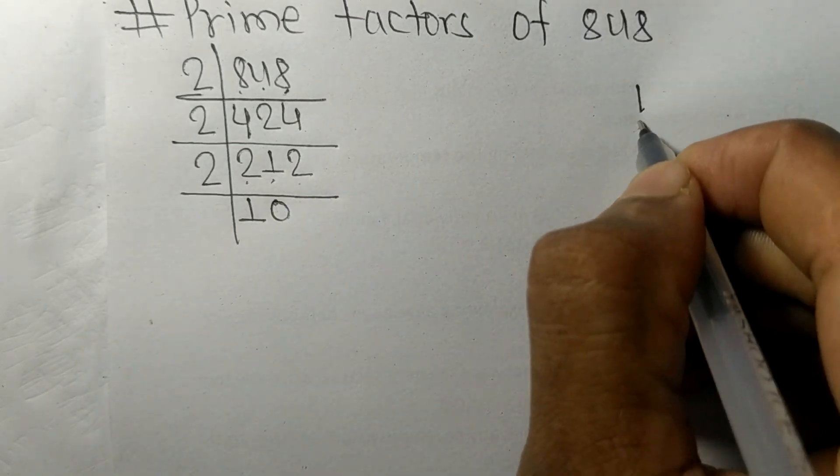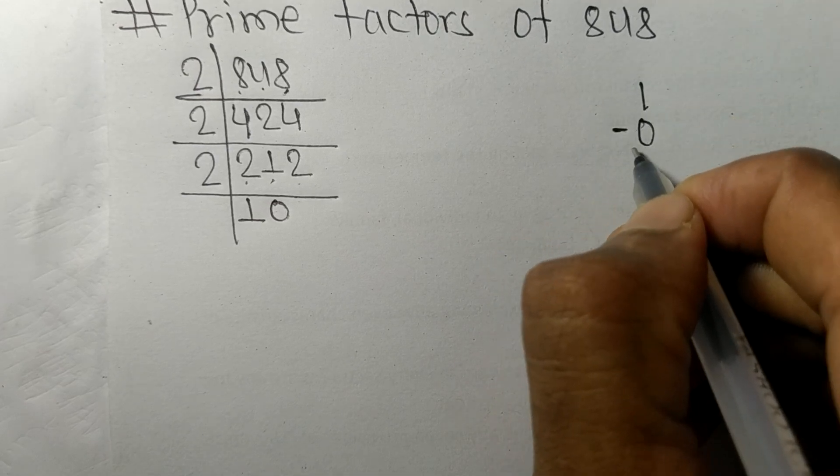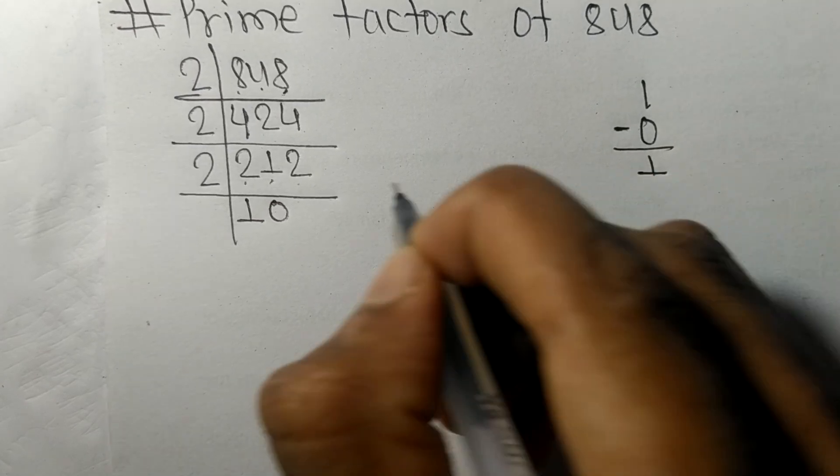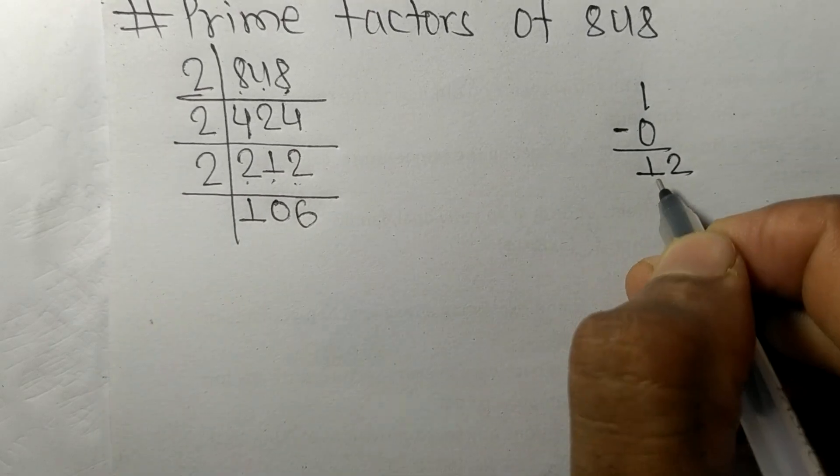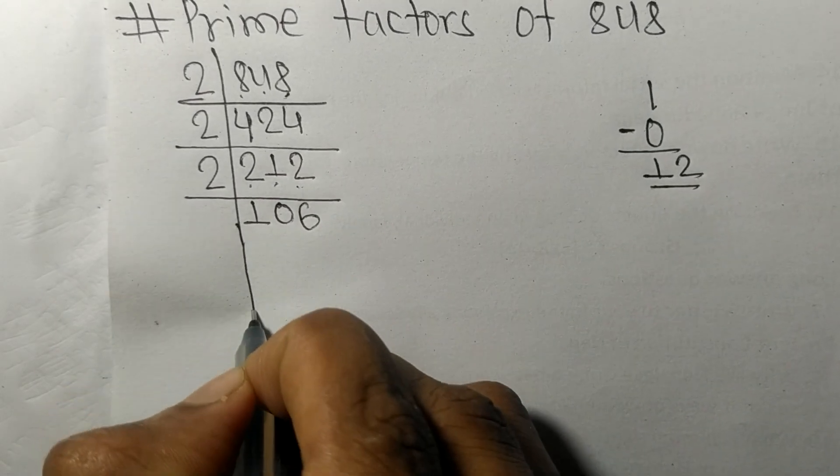Now we have 1, so 2 times 0 is 0. On subtracting we get 1, and 2 times 6 is 12.